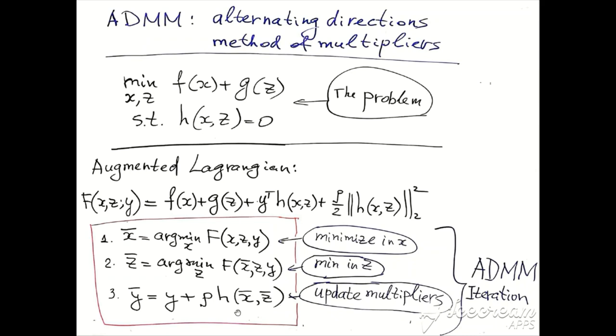The multipliers are updated by the standard formula for augmented Lagrangian. Pay attention that with those two sequential minimizations in X and then in Z, we do not get to the minimum in both variables at the same time, in both groups of variables.